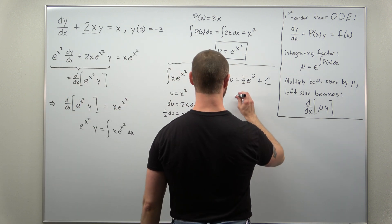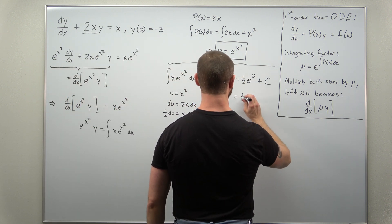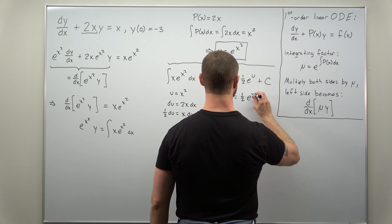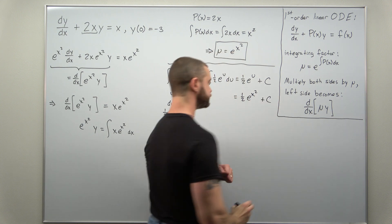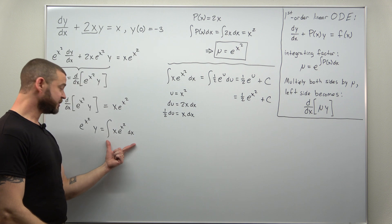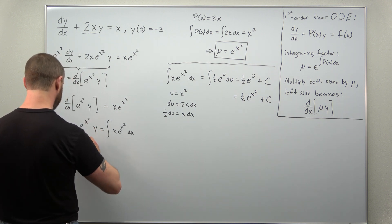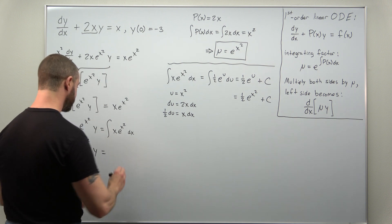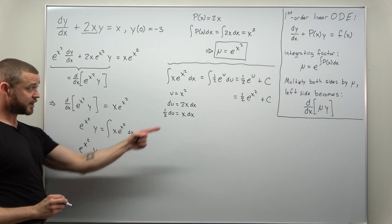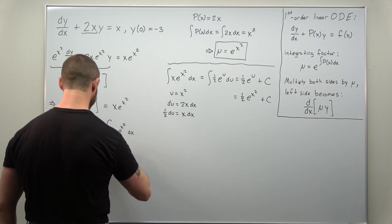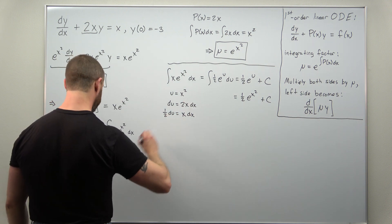All right, so we're going to write the anti-derivative here. We back-substitute u as x squared, and that is the integral of the right-hand side. So let's go ahead and write that down. The left side we're going to keep as e to the x squared times y. We just integrated the right side as one-half e to the x squared plus c.